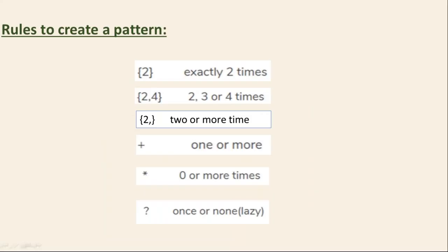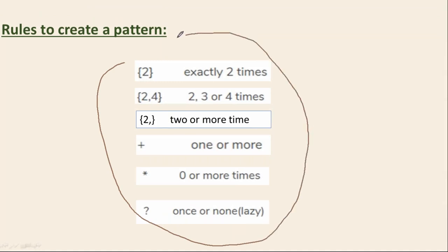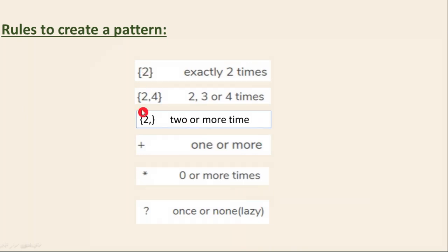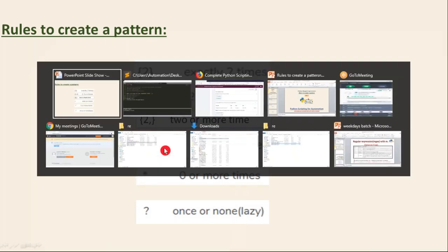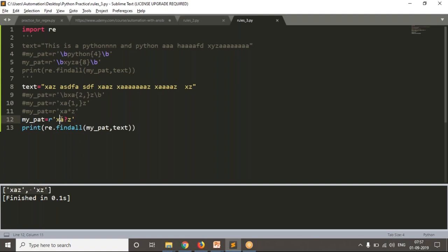So guys, these are some more simple rules to create your pattern and they are very, very important. Whatever rule we use in your pattern — make sure that when applying these rules, they are applicable for a particular character, not for your entire word. For example, the question mark here applies to 'a'. Curly braces for 'n' — not for your entire word. Be clear: this is for only the 'n' character. You are applying this concept to one character.